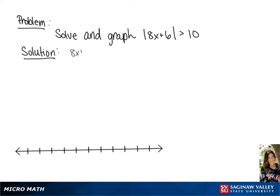We have the absolute value of 8x plus 6 is greater than 10. This is going to give us two inequalities: 8x plus 6 is greater than 10, or 8x plus 6 is less than negative 10.